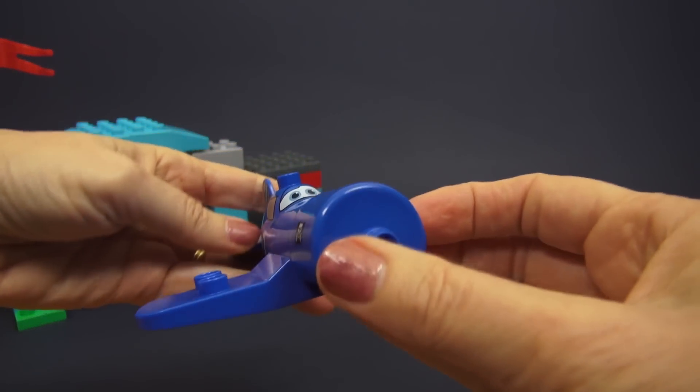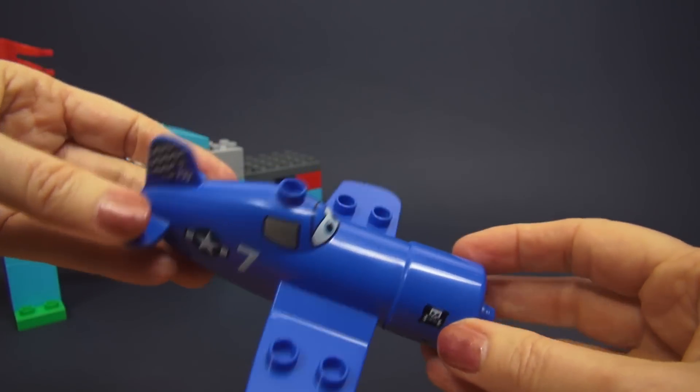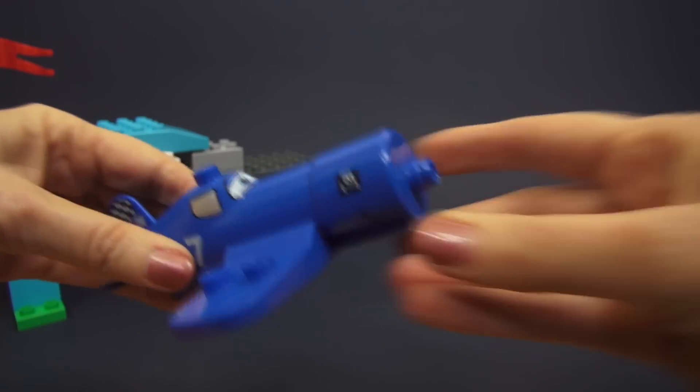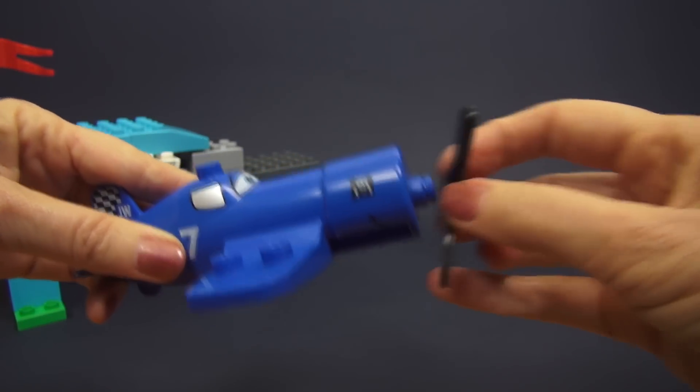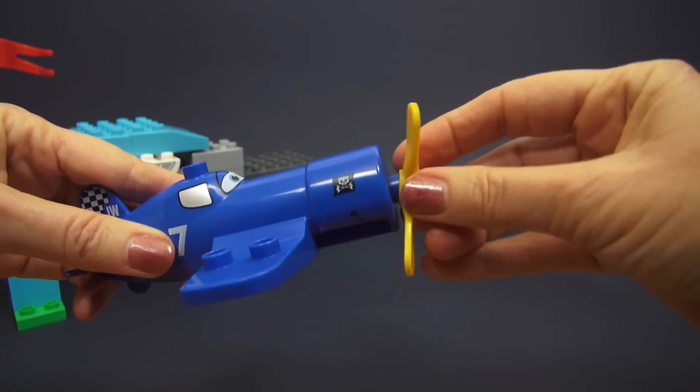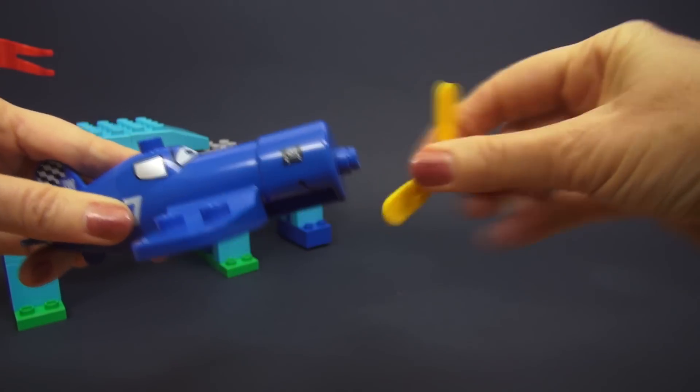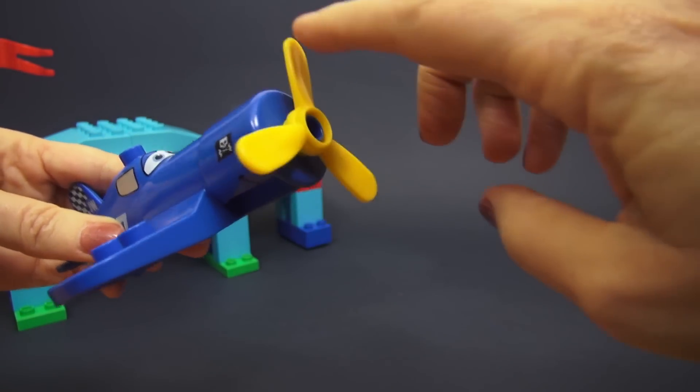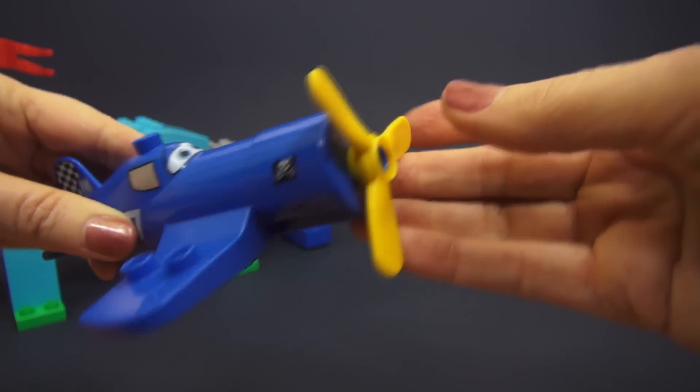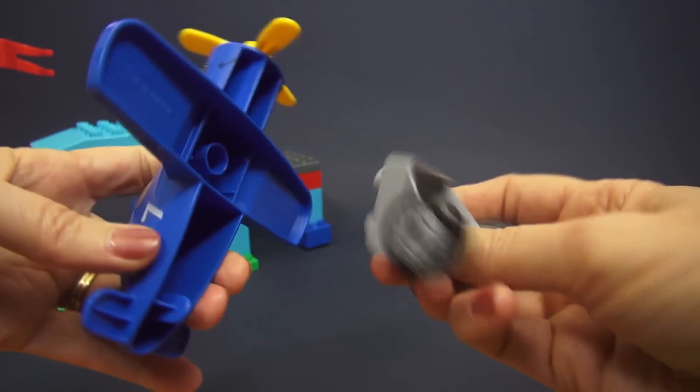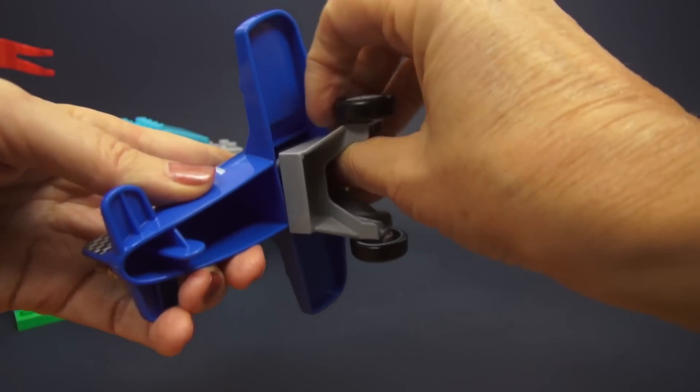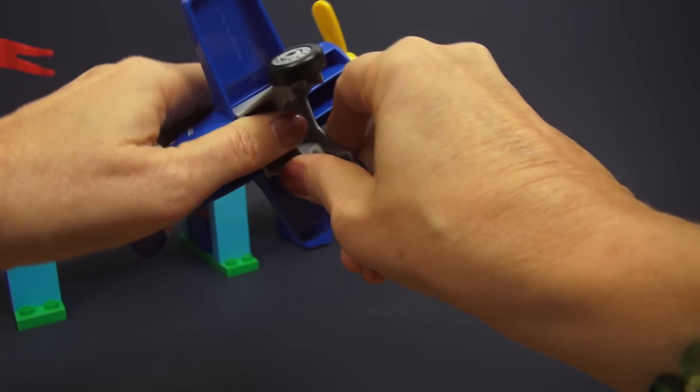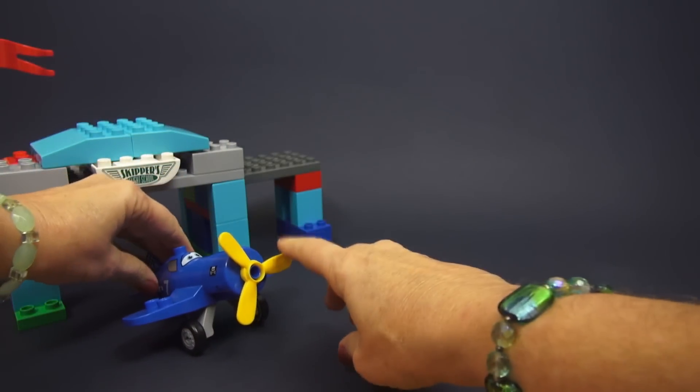First let's meet Skipper. Skipper is our teacher, he is the veteran who was in the Navy and will teach Dusty how to fly higher and faster. So actually he gets a yellow propeller to make sure you get it on the right way, because when you do it snaps and then look it actually goes around. So isn't that neat?